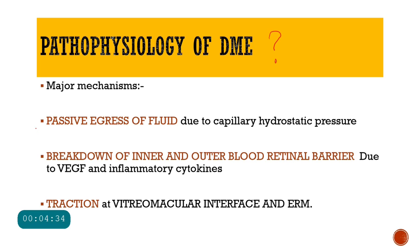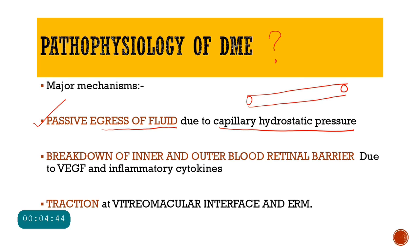Mechanism one is the passive egress of fluid due to capillary hydrostatic pressure. There are capillaries present in the retina, and because of the pressure of blood flowing through these capillaries, fluid comes out passively — without any force — and therefore it is called passive egress of fluid.